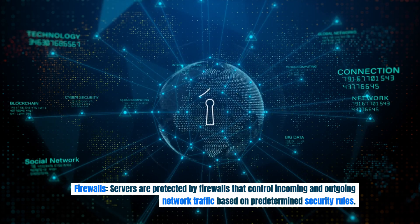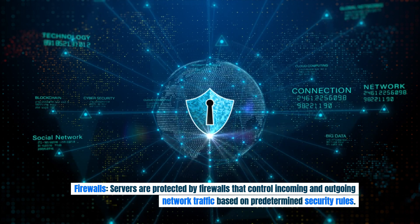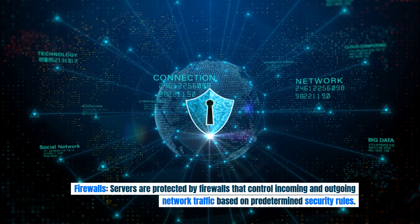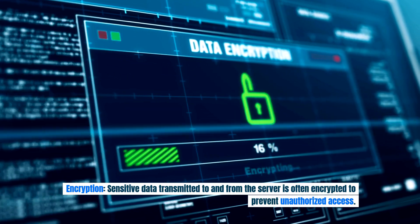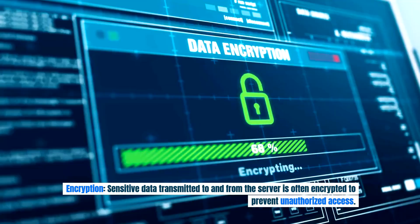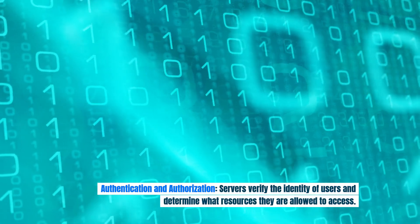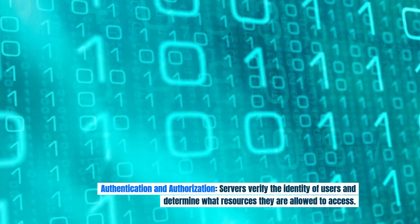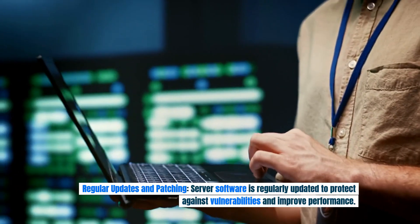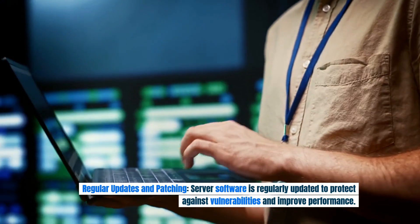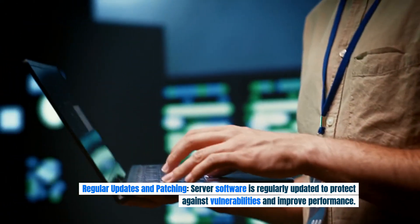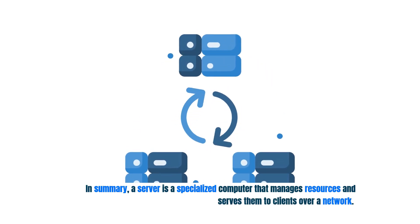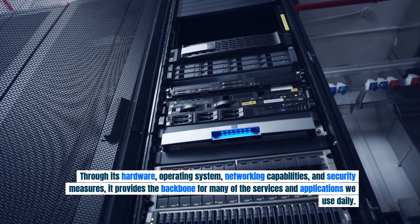Firewalls: servers are protected by firewalls that control incoming and outgoing network traffic based on predetermined security rules. Encryption: sensitive data transmitted to and from the server is often encrypted to prevent unauthorized access. Authentication networking capabilities and security measures.